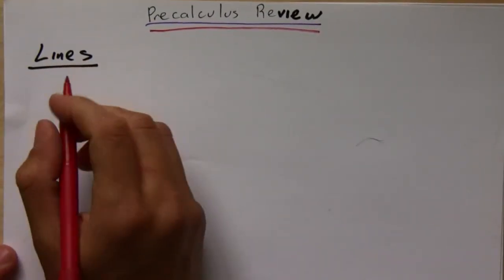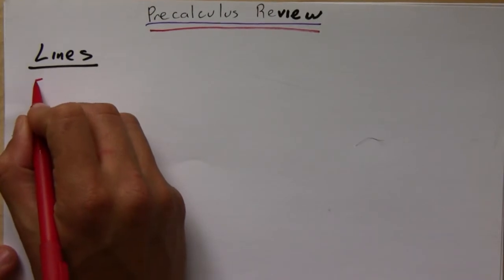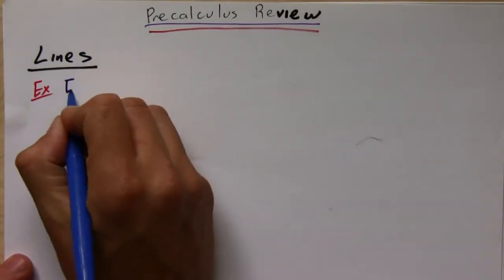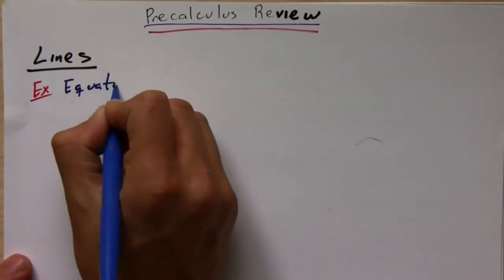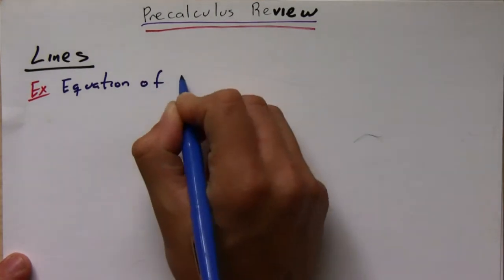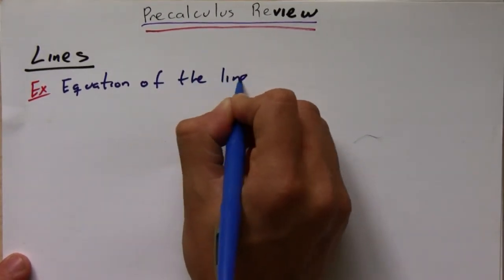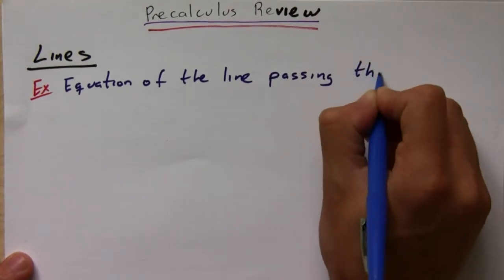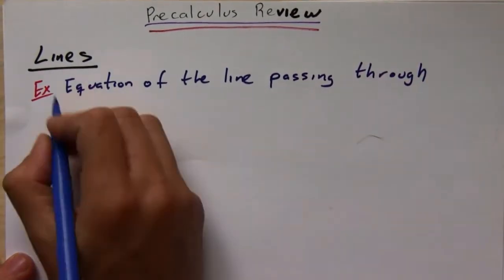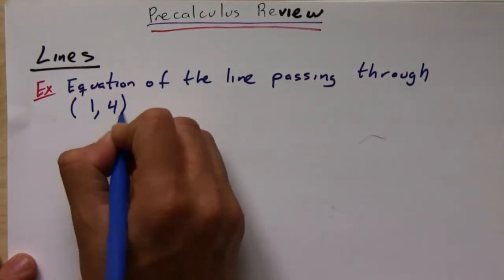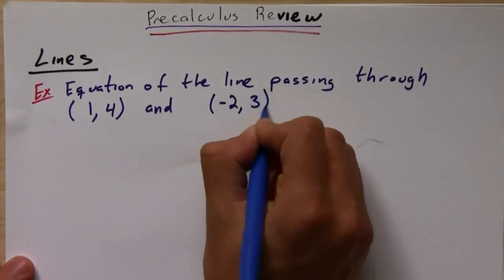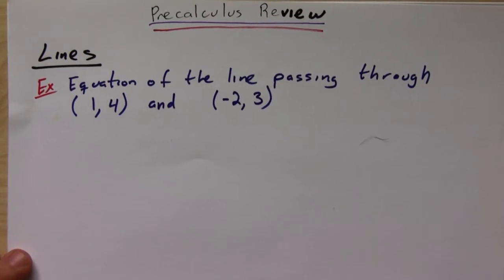Now most of this we're going to go through using examples. So let's say you want to find the equation of a line passing through two points: (1,4) and (-2,3).